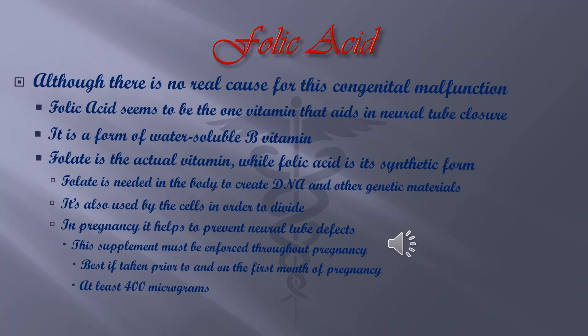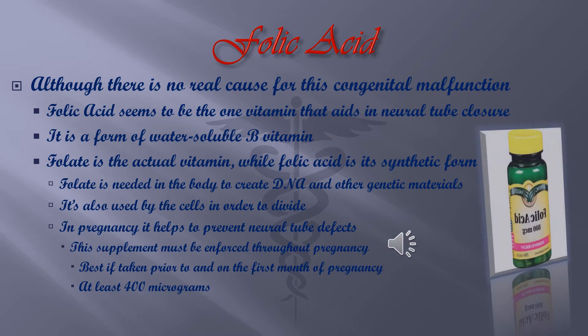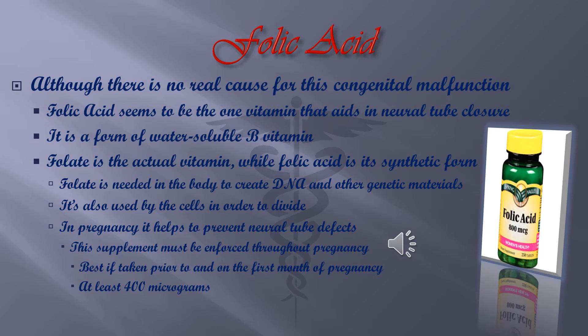Folic Acid is the vitamin that allows the body to create DNA and other genetic materials, and allows cells to divide. In pregnancy, it aids neural tube closure. Women must take 400mg prior to and during the first month of pregnancy to prevent Spina Bifida.